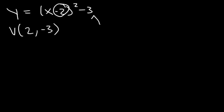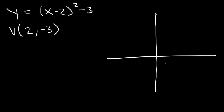Change this sign, but don't change this one. Now let's go ahead and plot the vertex. It's 2 units to the right and down 3, so it's over here.